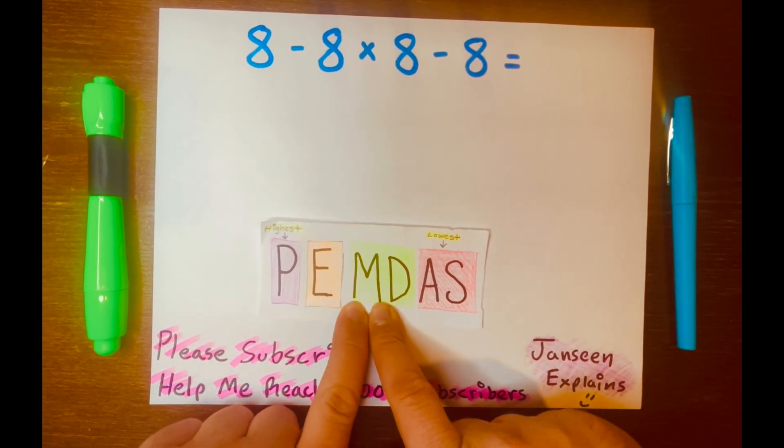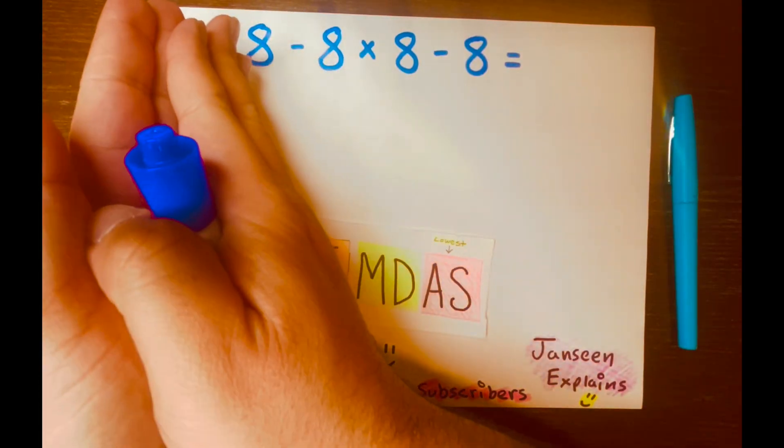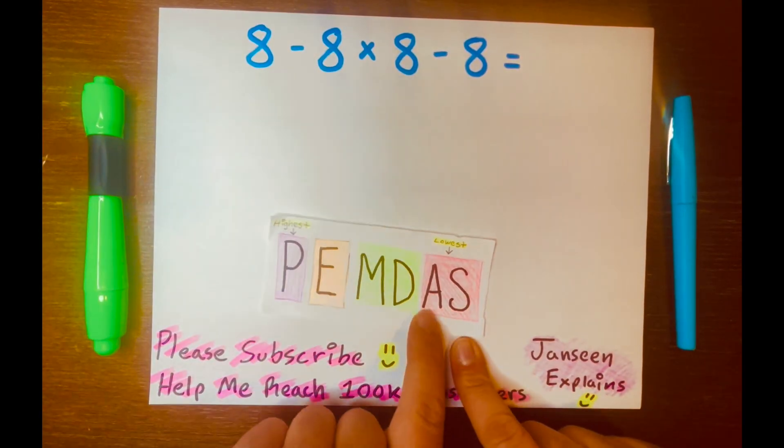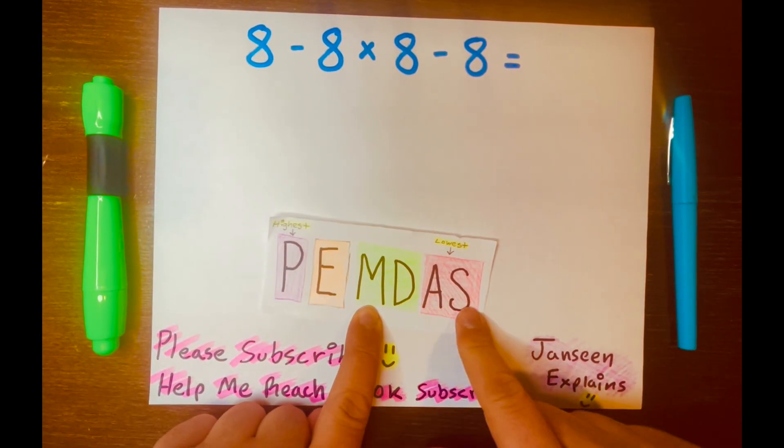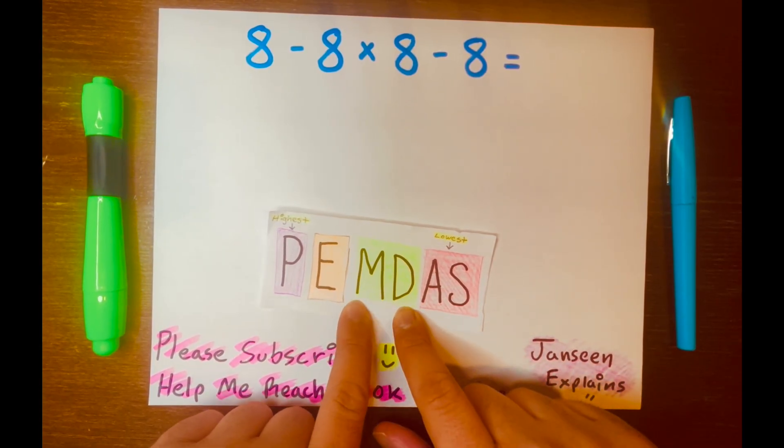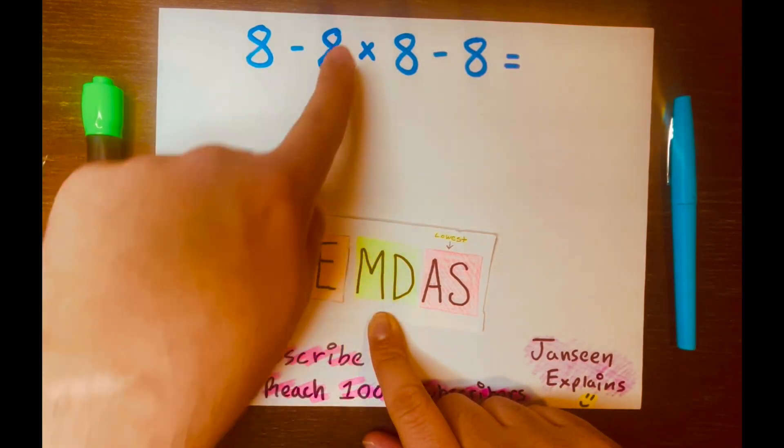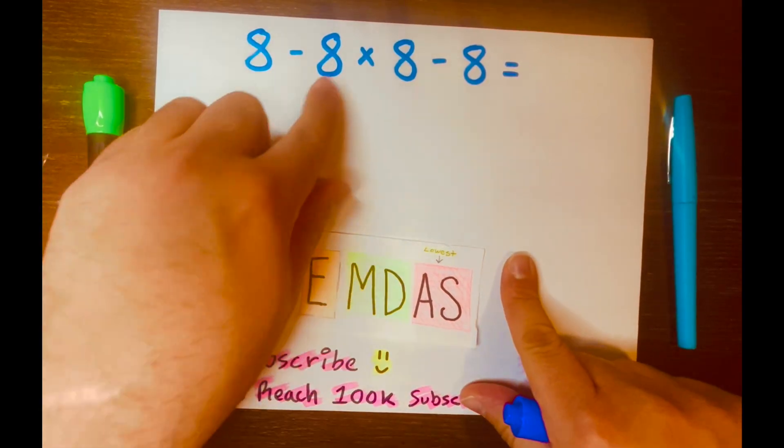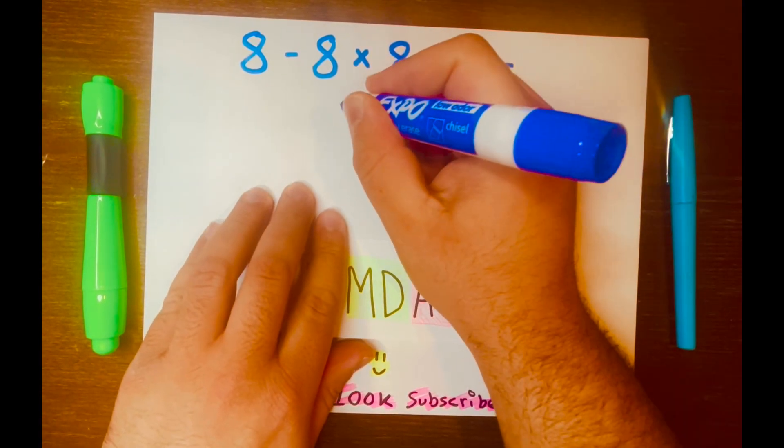So multiplication will go first, right? Because we're solving the math problem from left to right. Subtraction is in the lowest level, and multiplication is above the lowest level, which is the MD, multiplication and division. So multiplication is in our problem, not division, multiplication. So 8 times 8 will go first. So what's 8 times 8? 64.